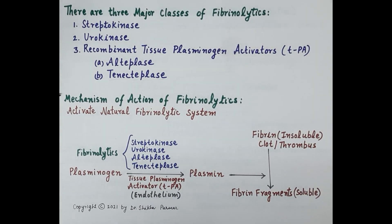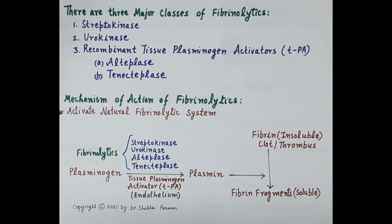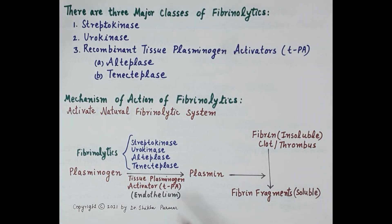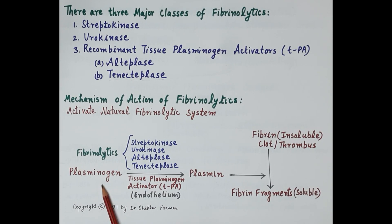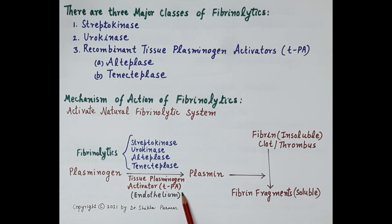Fibrinolytics are drugs that activate the natural fibrinolytic system. Physiologically, if the wall of a blood vessel is ruptured, bleeding occurs and is stopped by clot formation at the site of injury. After healing, the fibrin clot is dissolved. Plasmin is the enzyme that digests fibrin, and it is generated from plasminogen. Plasminogen exists in two forms: plasminogen circulating in the plasma, and plasminogen bound to the fibrin in a clot.